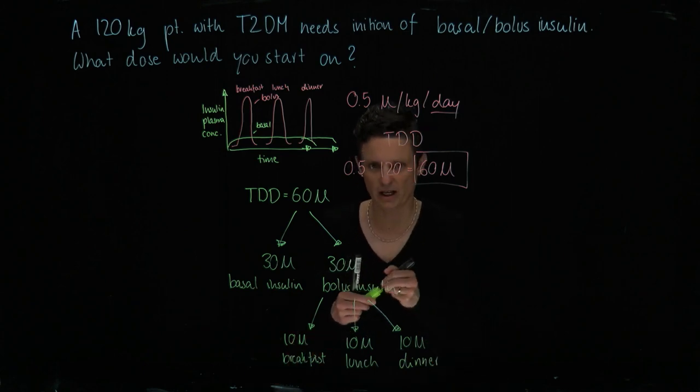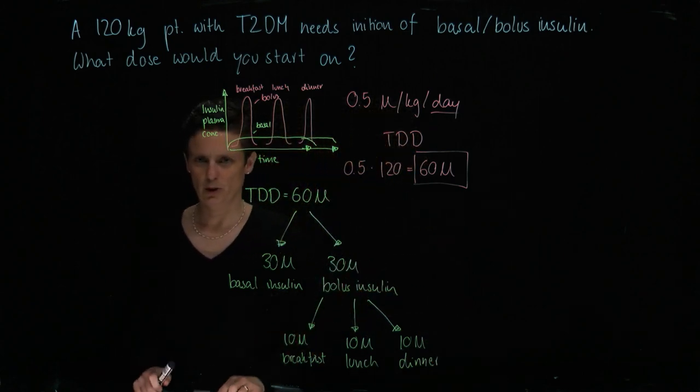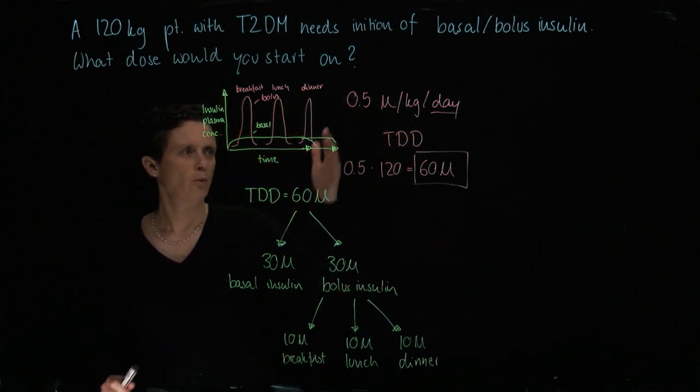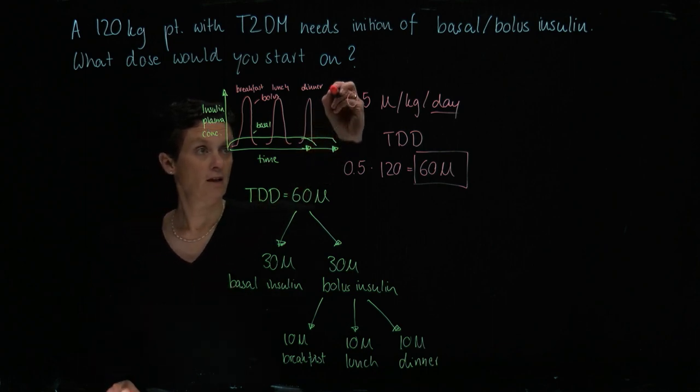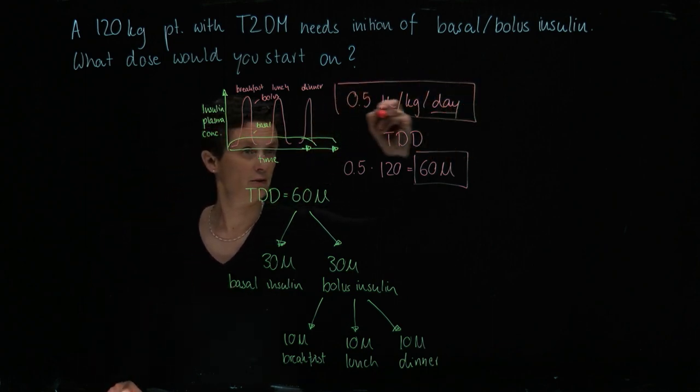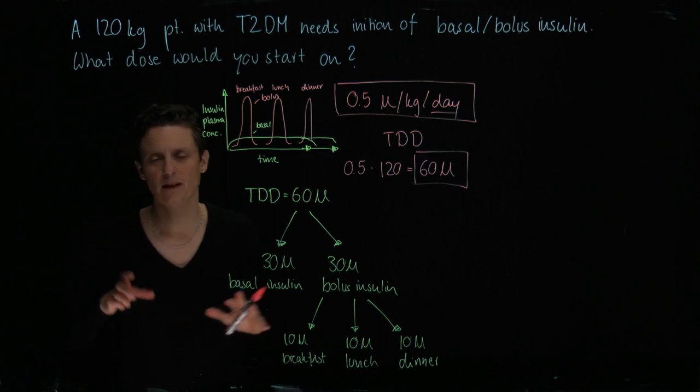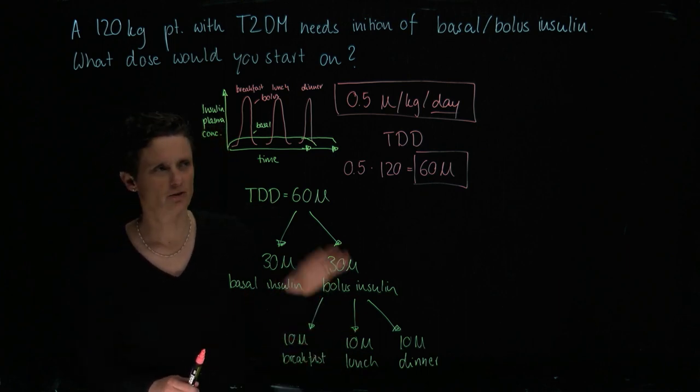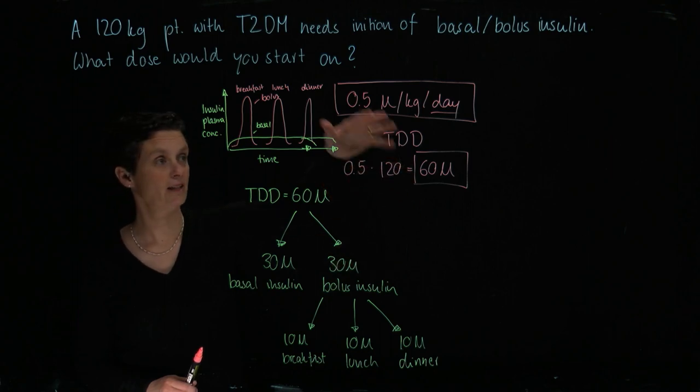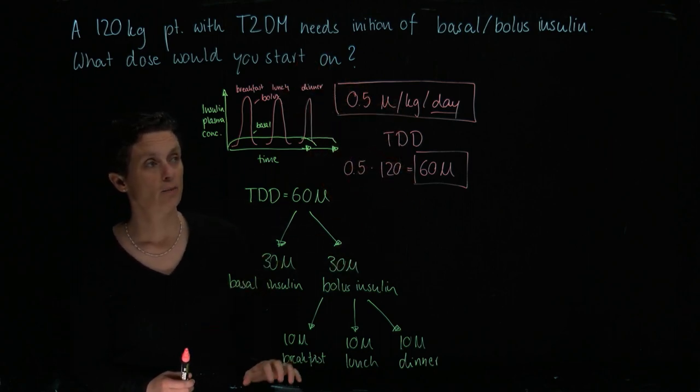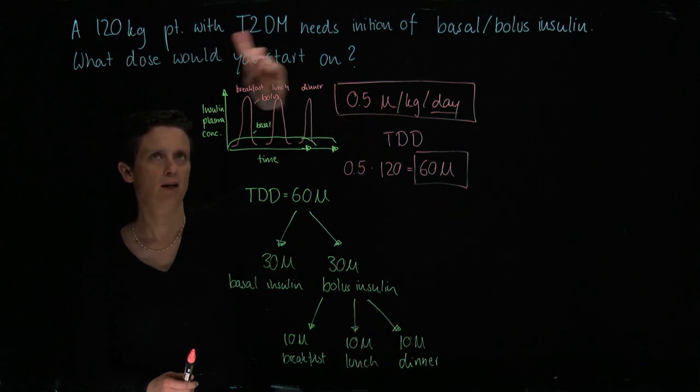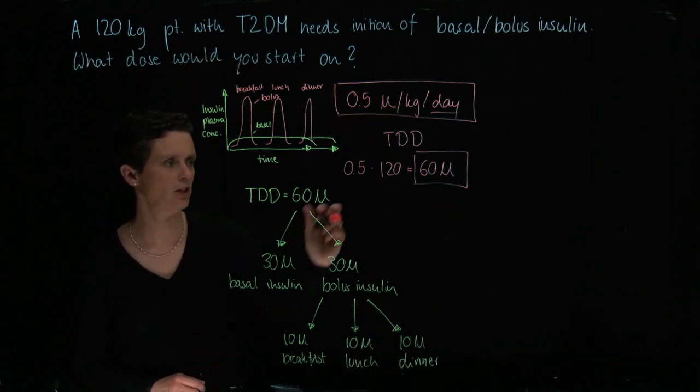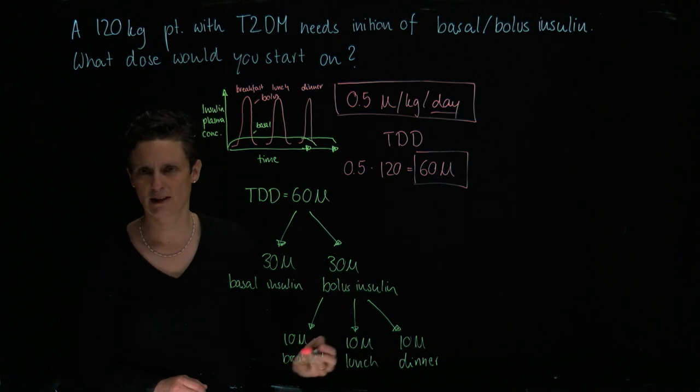So just to recap, what we're going to do is start with this formula, which is pretty conservative, rather on the low side, but we're always worried about hypoglycemia. So it's always smarter to start really low and then adjust. Start with this formula: 0.5 units per kilogram per day. We plug in the weight of the patient and we get our total daily dose.